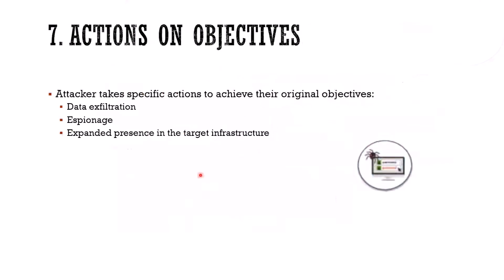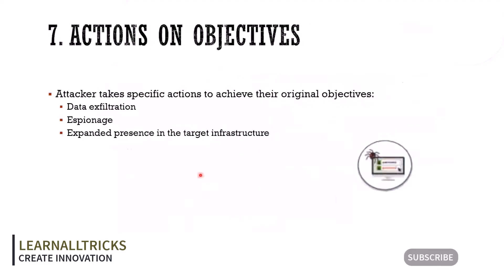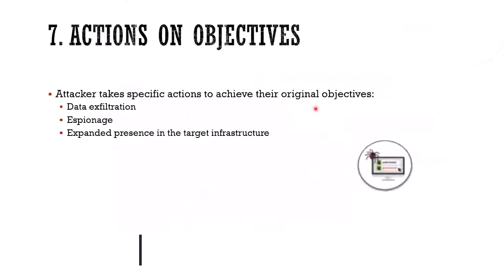Finally, what have you got to show for all this trouble? We want actions on objectives. We're going to take specific actions to achieve the original objective: steal a database, do espionage, expand our presence in the target infrastructure, or own that system. This is the idea of the cyber kill chain.